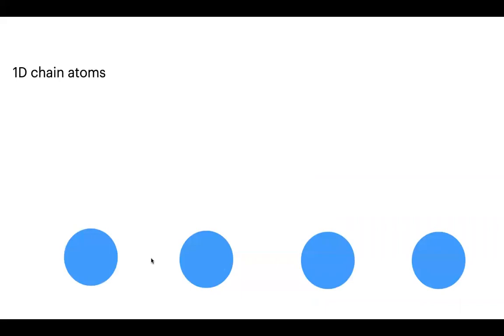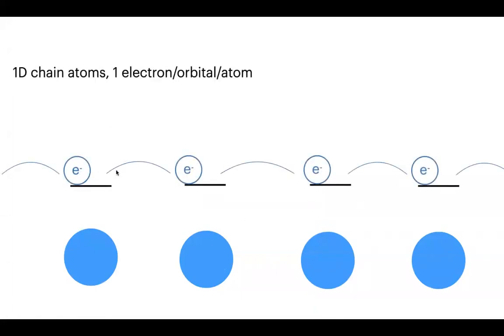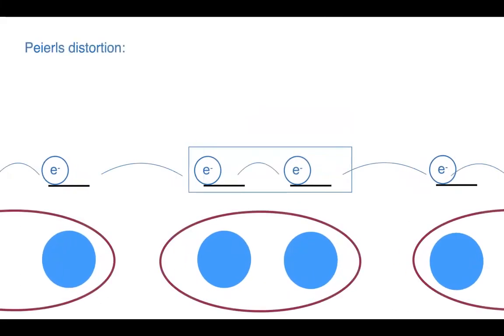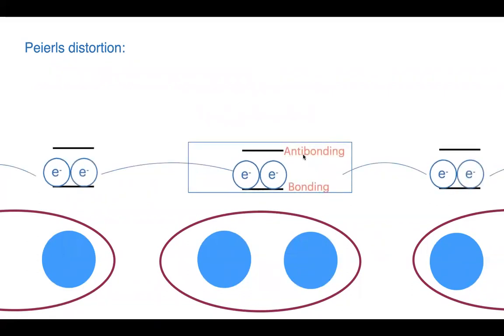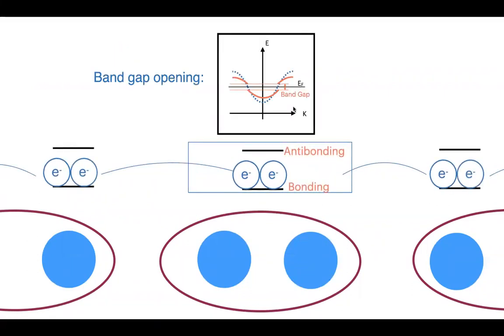Let's start with our 1D chain of atoms, the usual example, which has one electron per orbital per atom. We know that this will have a tendency to have a Peierls distortion, so the atoms will form pairs — they'll get closer as pairs — and you'll also have the electronic part for bonding and antibonding orbitals. This will also lead to a bandgap opening, and I'll show a slightly different perspective as to why this is happening.